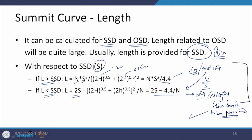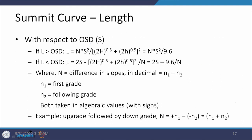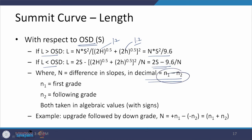Similarly, for the OSD case, both h₁ and h₂ become 1.2 meters. If L is greater than OSD, the formula becomes L = NS²/9.6. If L is less than OSD, the formula becomes L = 2S − 9.6/N, where N is the difference in slopes. The sign convention must be observed — for an upgrade followed by a downgrade, it is +n1 − (−n2), giving N = n1 + n2.